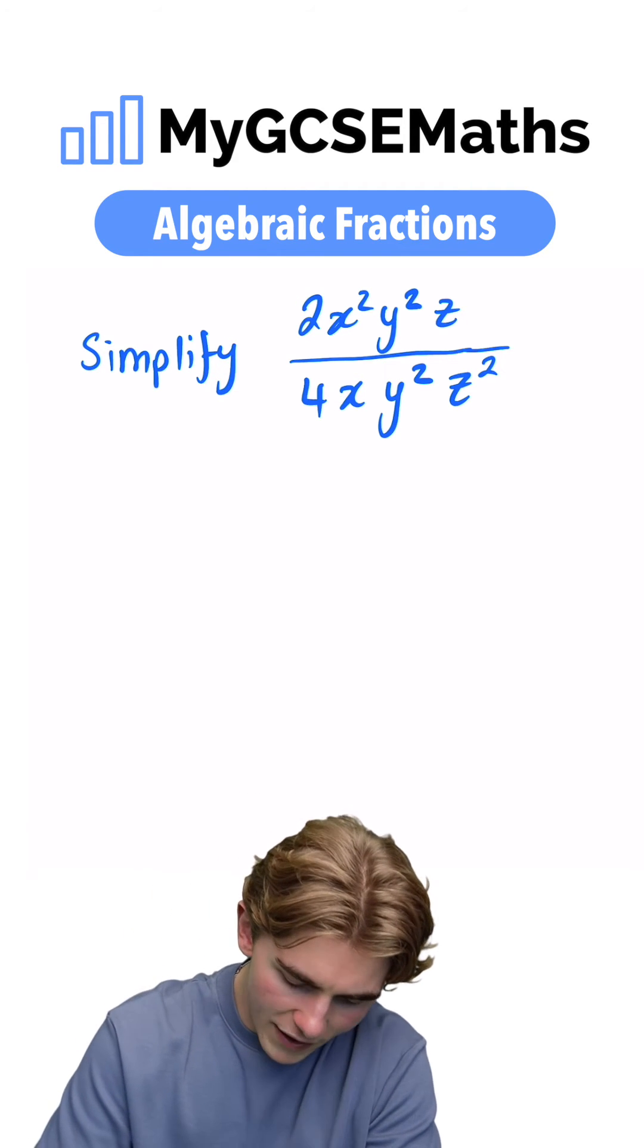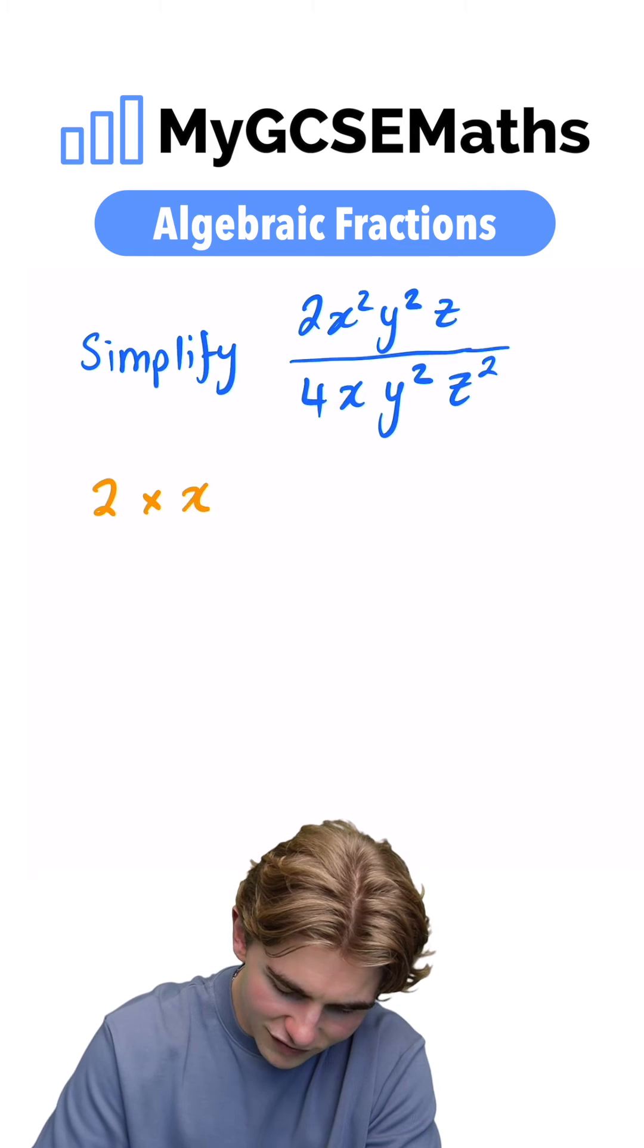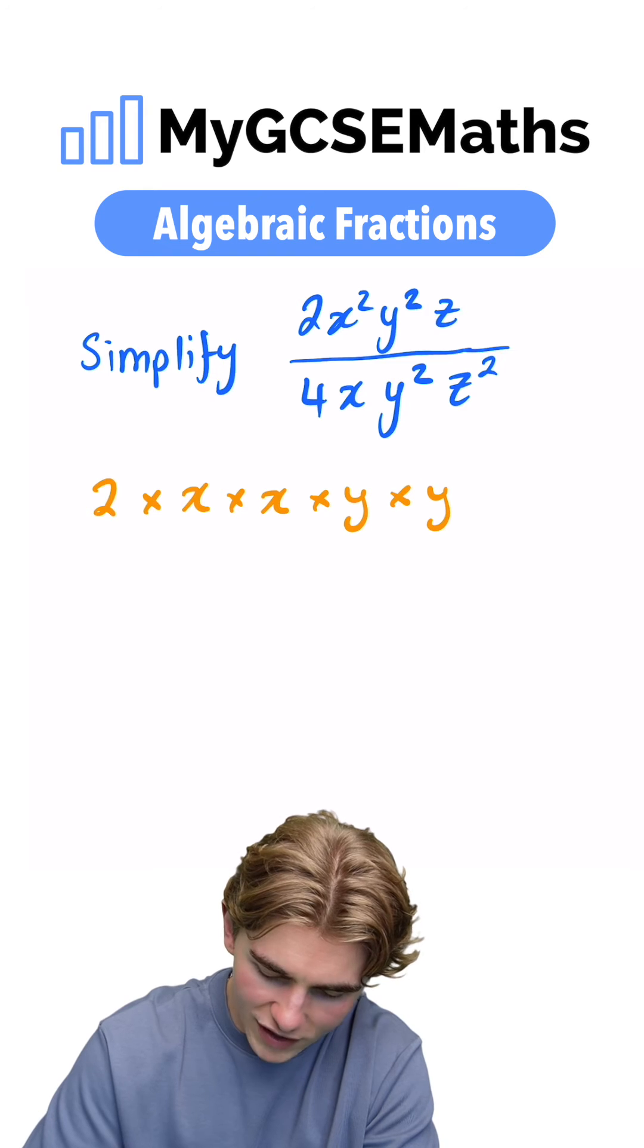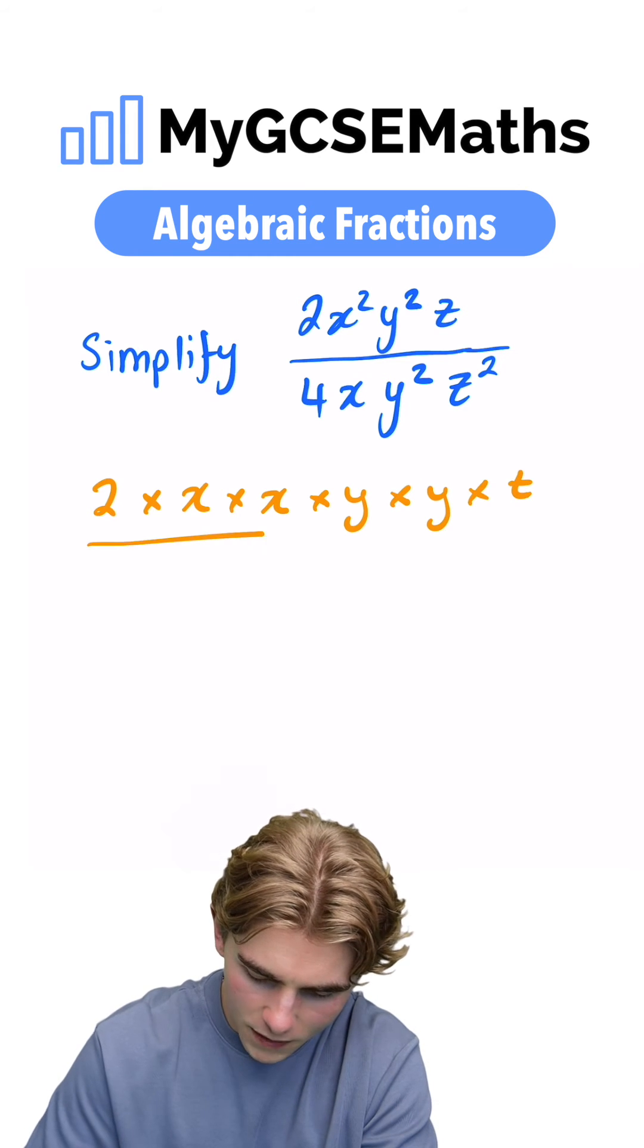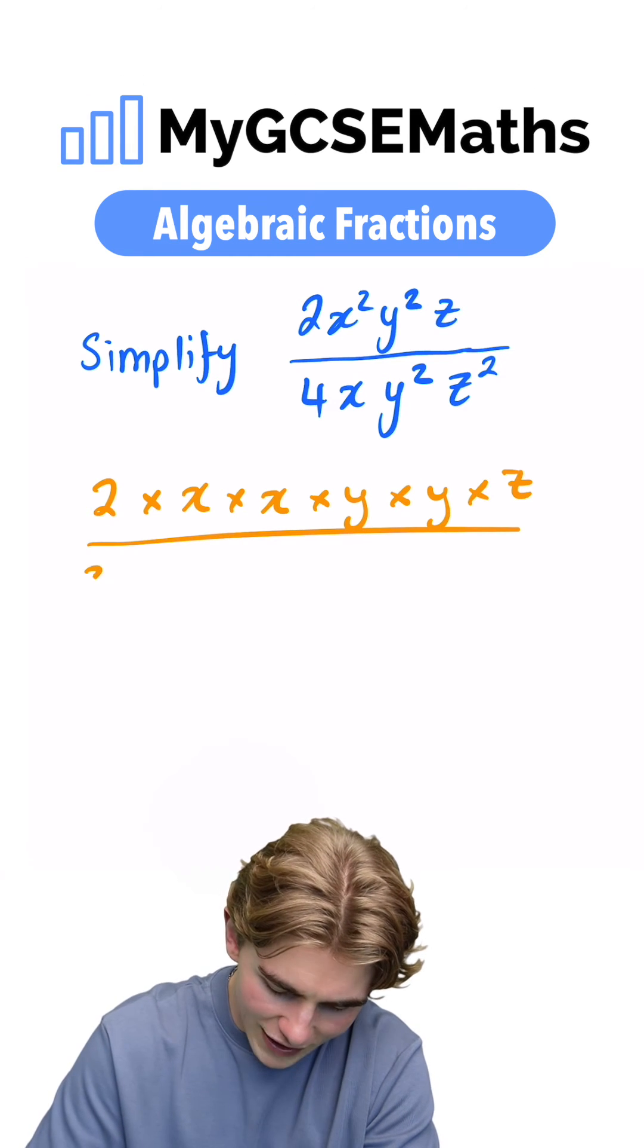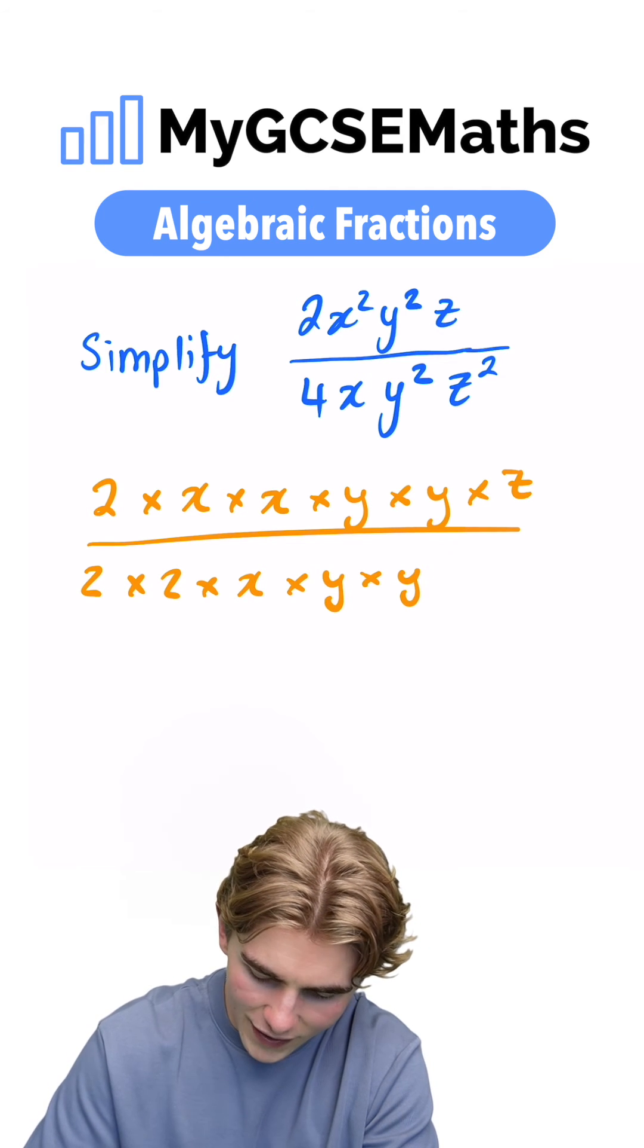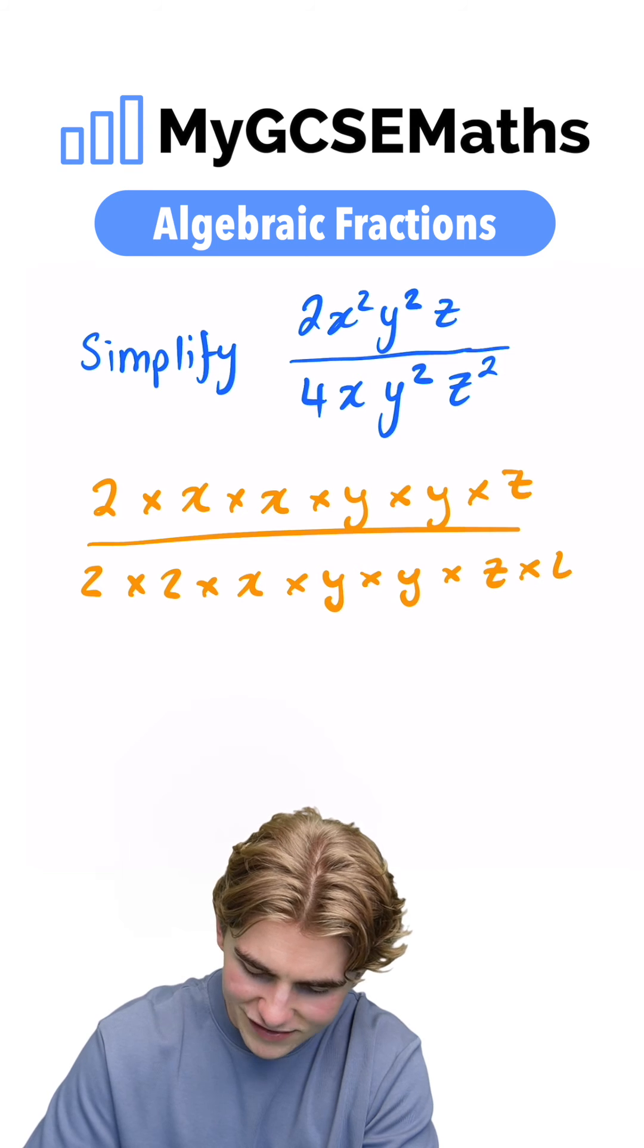So we can write the numerator as 2 times x times x because of x squared, times y times y because we have y squared, times z. We can then write the denominator as 2 times 2 times x times y times y times z times z.